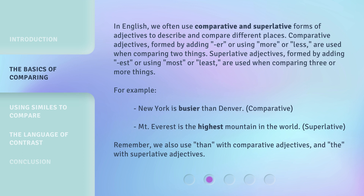For example: 'New York is busier than Denver' — comparative. 'Mount Everest is the highest mountain in the world' — superlative. Remember, we also use 'than' with comparative adjectives, and 'the' with superlative adjectives.